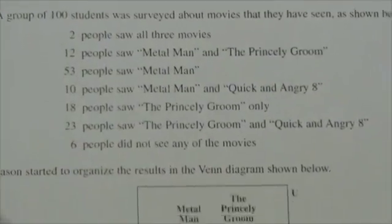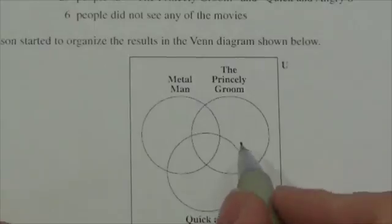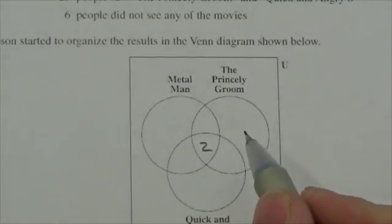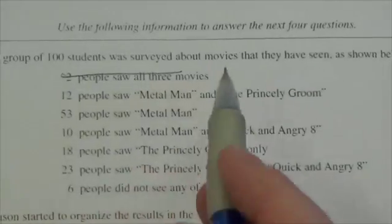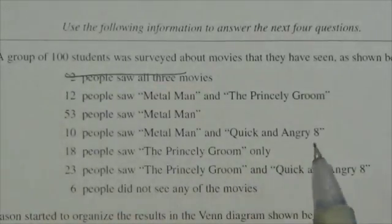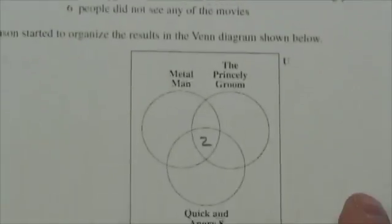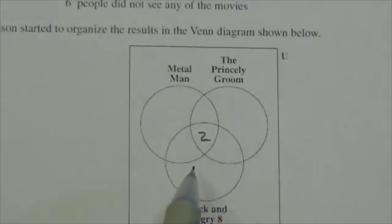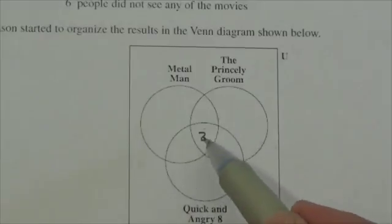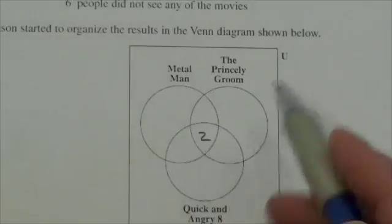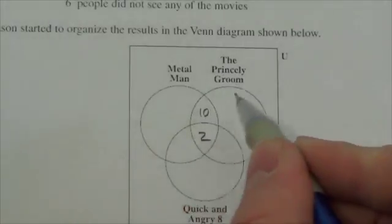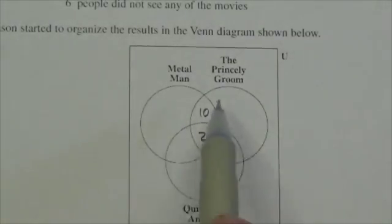Two saw all three movies, so that's going to be right here in the center. Twelve saw Metal Man and Princely Groom, so that's this set right here. But this part is broken into two bits - this has to have twelve total, and if there's two here, there must be ten in that group that didn't see Quick and the Angry 8.